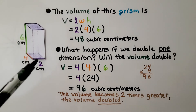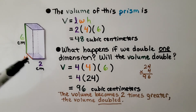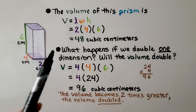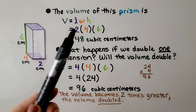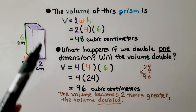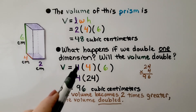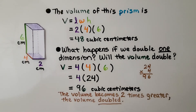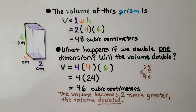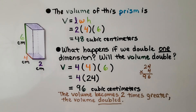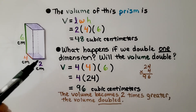Take a look at this prism. It has a length of 2 centimeters, a width of 4 centimeters, and a height of 6 centimeters. The volume is 2 times 4 times 6 — that's 2 times 24, which is 48 cubic centimeters. Now, what happens if we double one of the dimensions? We double this 2 to a 4. Now we have 4 times 4 times 6, which is 4 times 24, and 4 times 24 is 96 cubic centimeters. The volume becomes 2 times greater when we double one dimension — the volume doubled.